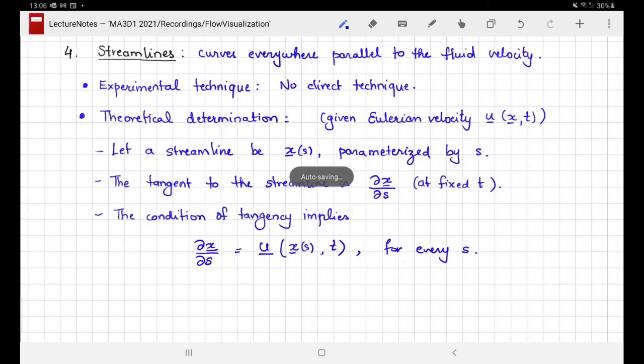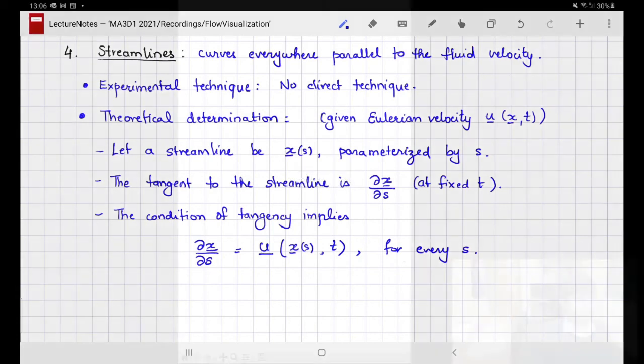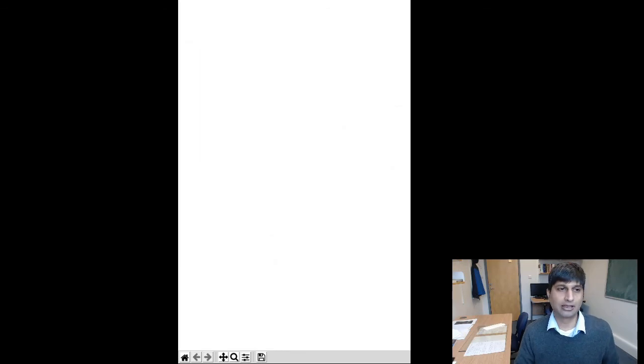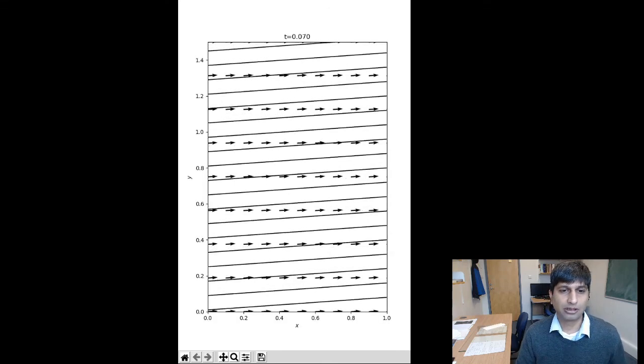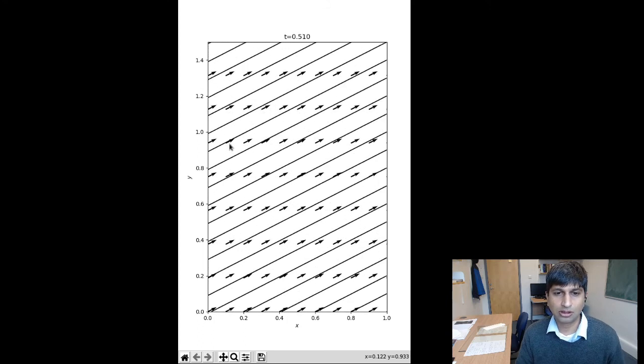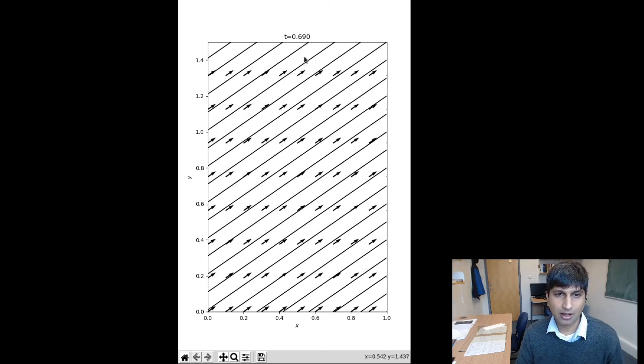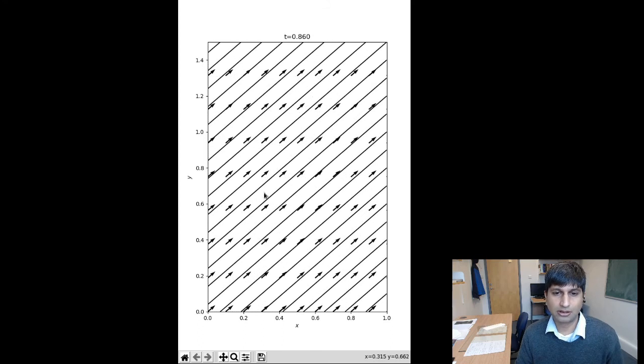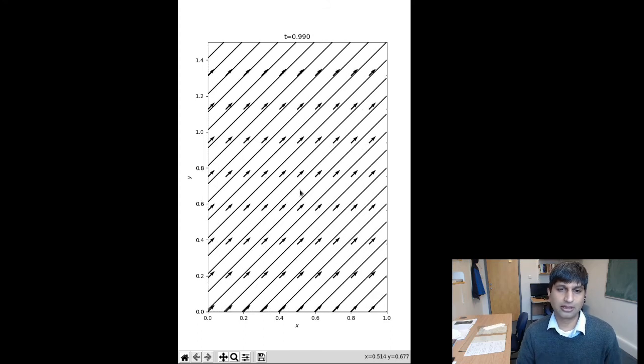In order to see this in action, consider the Python visualization for the example flow. Now we are going to plot the Eulerian velocity field. The arrows show the local velocity at this time and the curves are the streamlines. As you can see, the streamlines at every instance and at every location are parallel to the arrows. Therefore, they are parallel to the local velocity field.